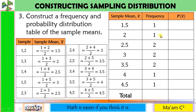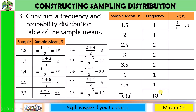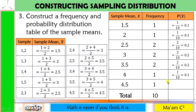Let us get the total by adding all frequencies: 1 + 1 + 2 + 2 + 2 + 1 + 1 = 10. The total is 10. For the probability, simply get the frequency divided by the total. So: 1.5 → 1/10 = 0.1; 2 → 0.1; 2.5 → 2/10 = 0.2; 3 → 0.2; 3.5 → 0.2; 4 → 0.1; 4.5 → 0.1. Remember, the sum of all probabilities must equal 1.